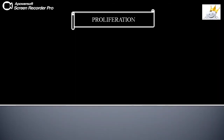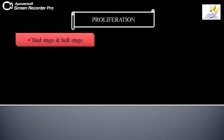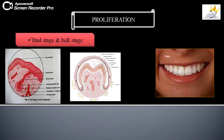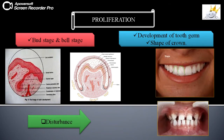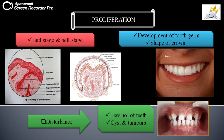Proliferation is the second process. It begins at the bud stage and continues through the bell stage. This process helps to provide adequate cells for the development of the tooth germ and also contributes to the shape of the crown. Any defect in proliferation results in failure of the tooth germ to develop, leading to the formation of fewer teeth than normal — as seen in this picture where missing lateral incisors can be appreciated. Excessive proliferation of cells may lead to cysts and tumors.